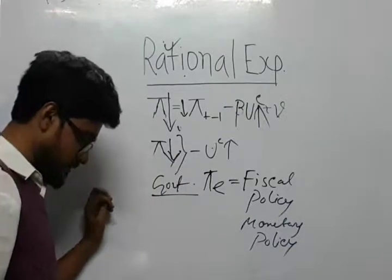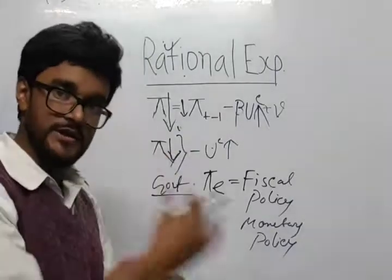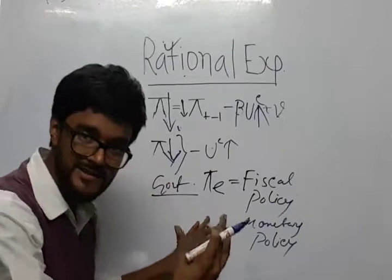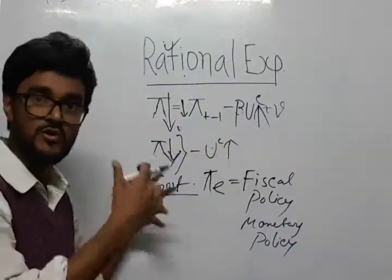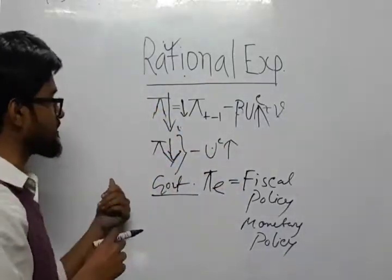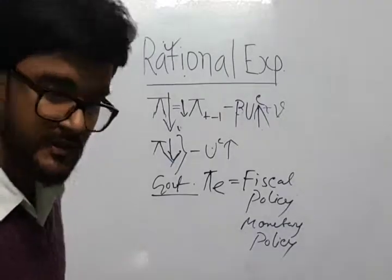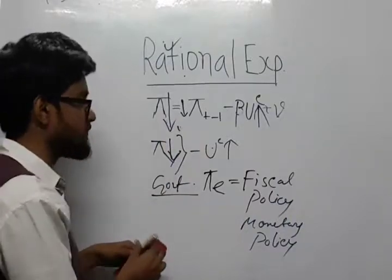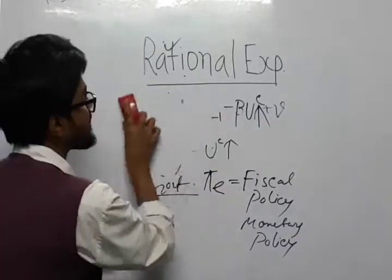So, the expected inflation will change accordingly. This way, Lucas and Muth think we can avoid the problem of sacrifice ratio or sacrificing GDP, which was taking place in the earlier model. We call it painless disinflation — here we are reducing inflation, but it is not painful, which was the case with sacrifice ratio or with adaptive expectation.